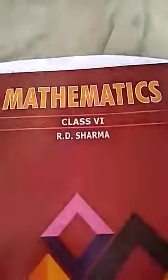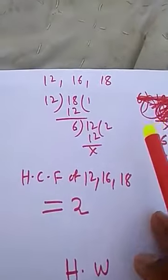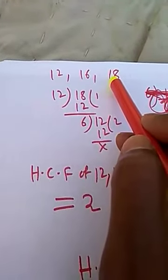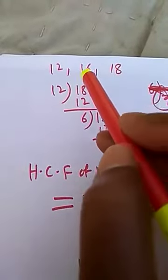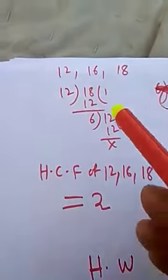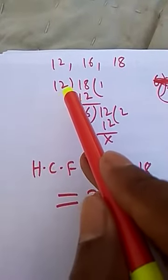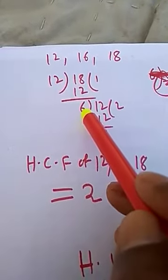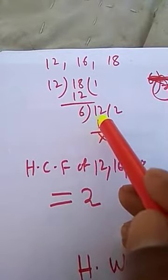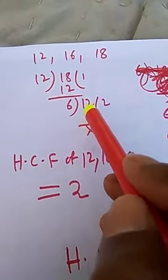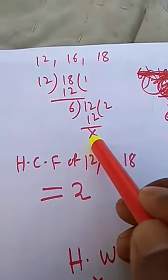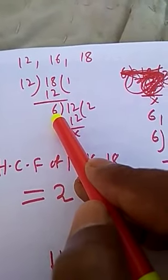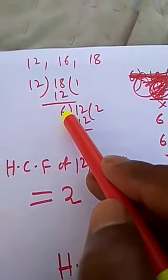We can also take a different pair first. Suppose we take 12 and 18 first. We divide 18 by 12: 1 time, remainder is 6. Now 6 will divide the divisor 12: 2 times equals 12, remainder is 0. So the HCF of 12 and 18 is 6.